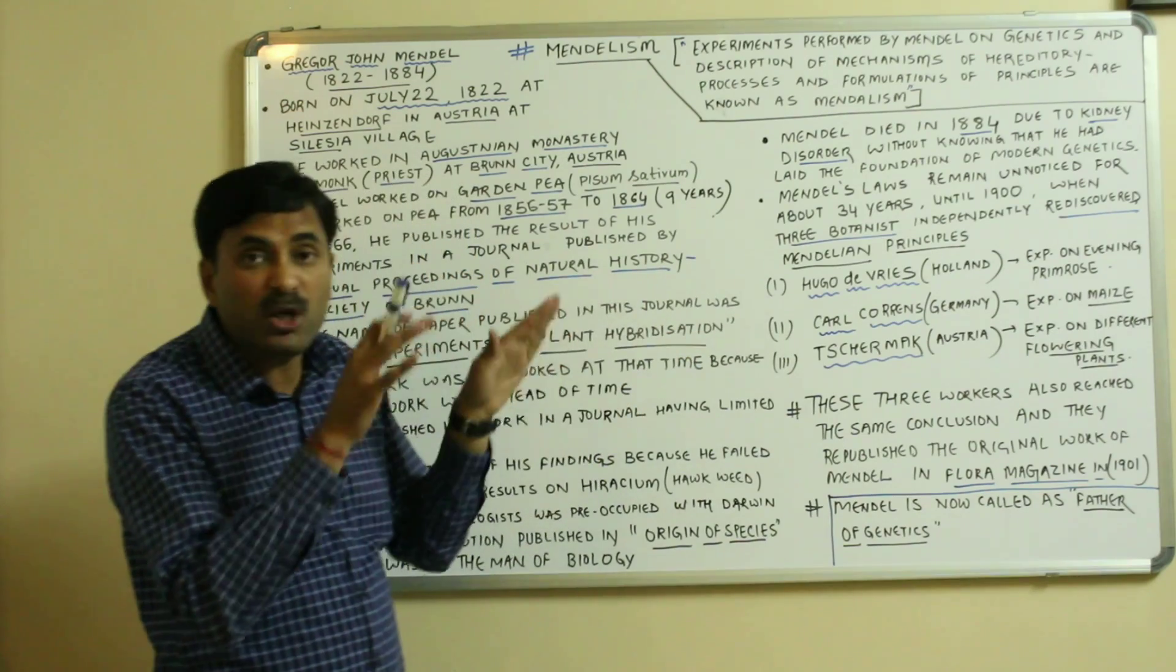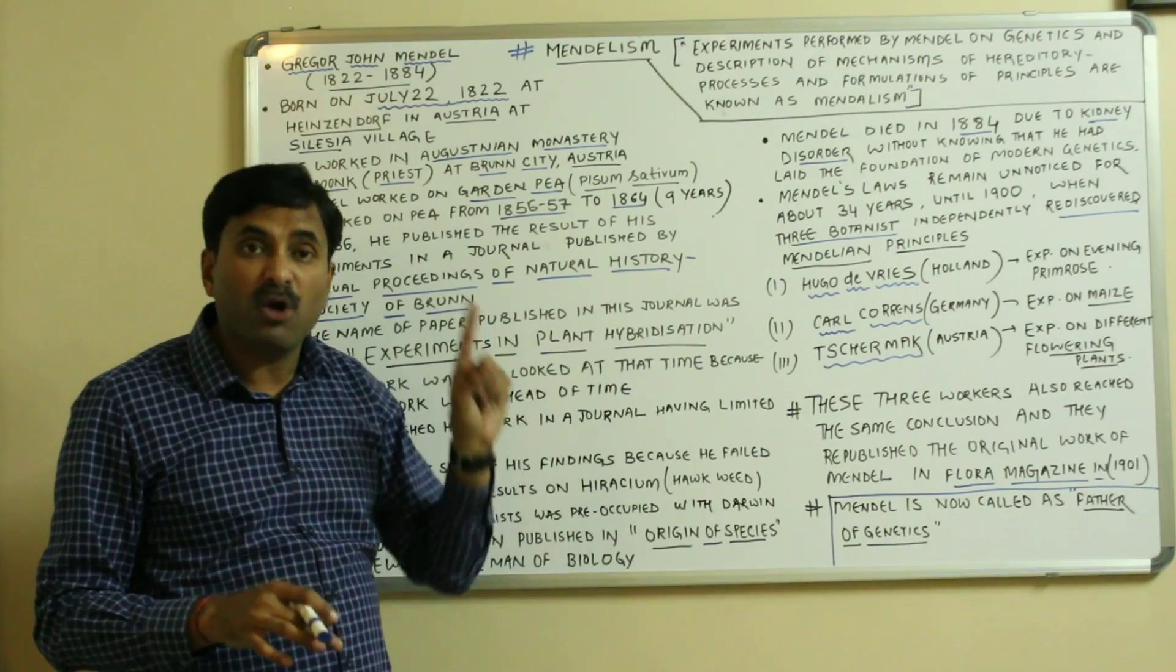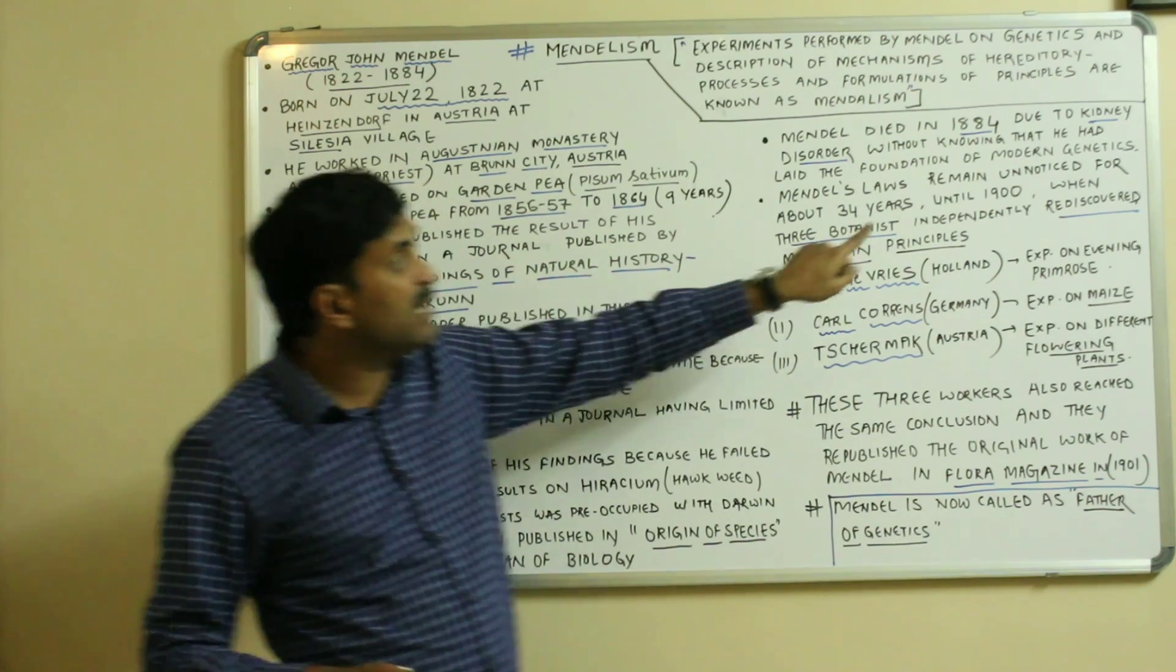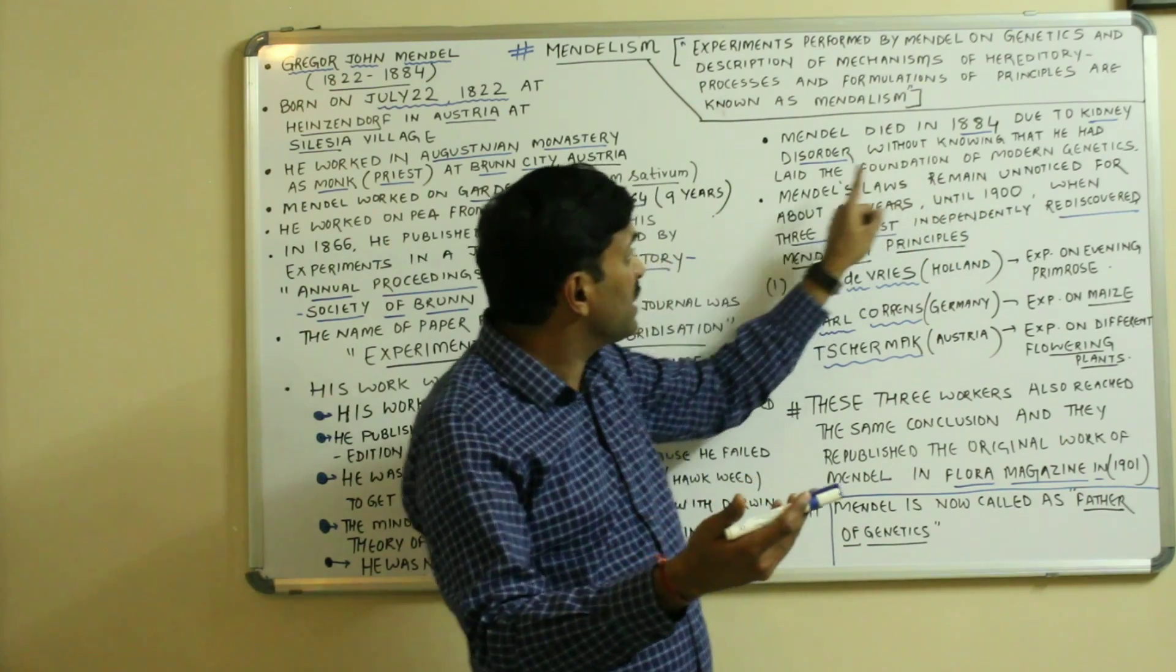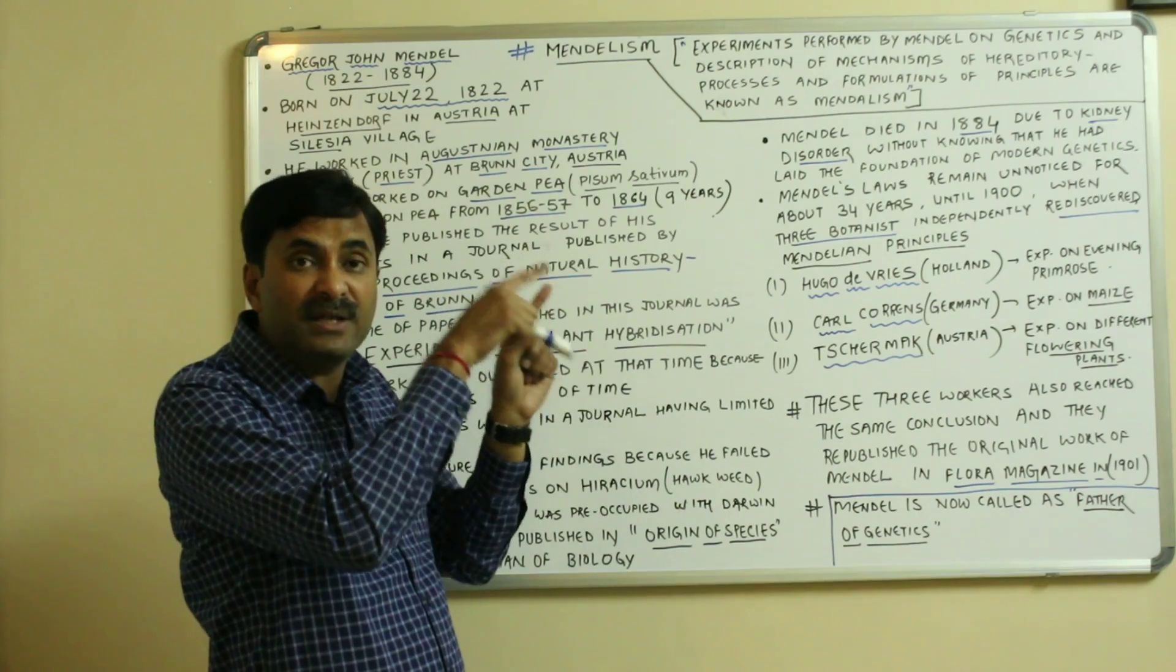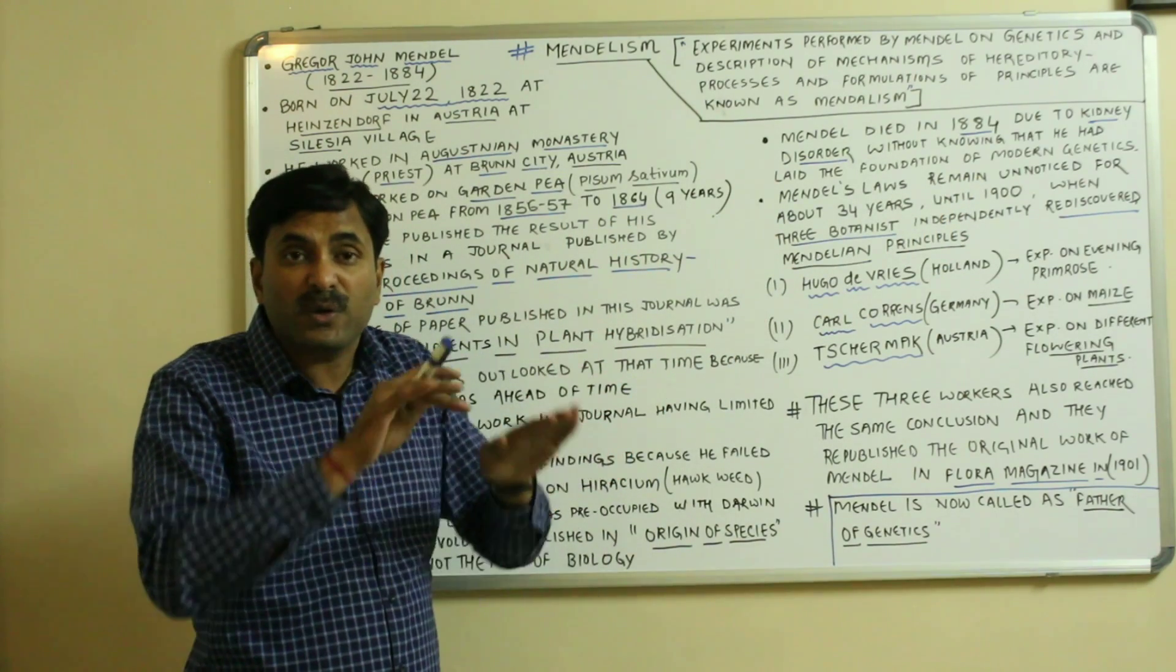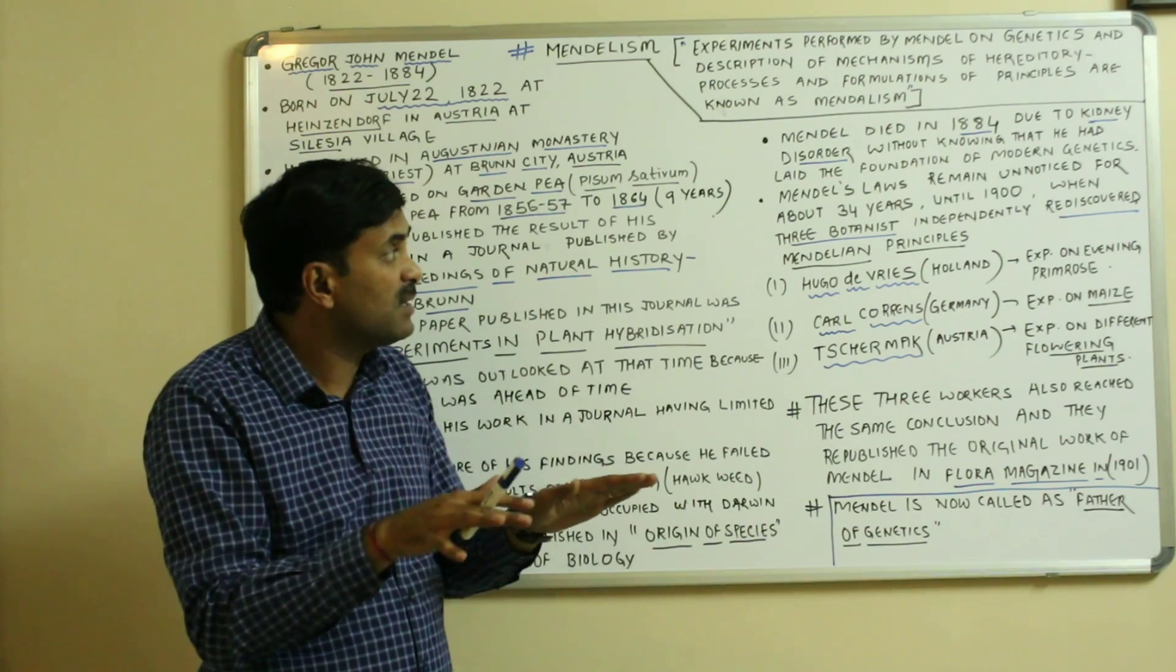Mendel's laws remained unnoticed for at least 34 years. Why 34 years? Because his work was published in the year 1866, but his work was rediscovered in the year 1900, in the next century. So right from 1866 up to the next century until 1900, for 34 years his work remained unnoticed.